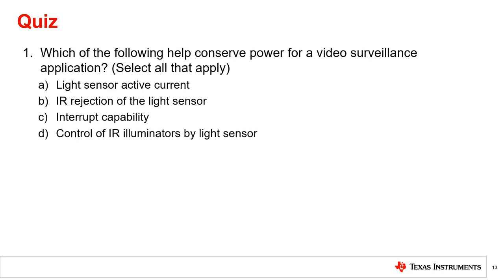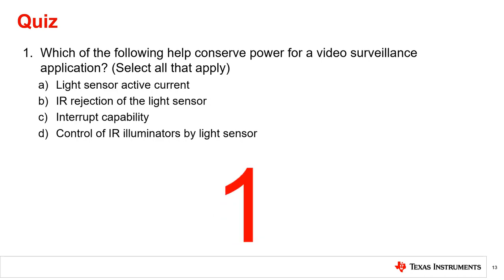Question 1: Which of the following help conserve power for video surveillance applications? Select all that apply. A low active current light sensor allows for operation with minimal current draw, thus conserving power. An interrupt capability allows the microprocessor to sleep and only wake up to take action when the light level crosses the threshold between day and night, greatly reducing the MCU active time, thus conserving power. And controlling the IR illuminators with a light sensor allows the light sensor to turn on the IR illuminators only when the environment is dark, thus conserving power.